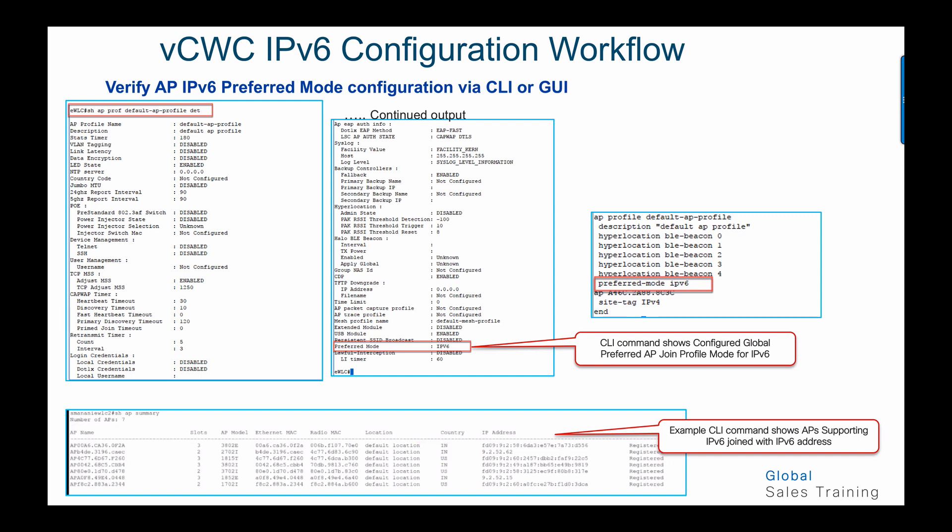Also, if you issue the command 'show AP summary', you can see the IP address of each AP — whether it has an IPv6 or IPv4 address — and know how the AP will join the controller under global configuration mode.